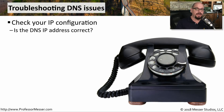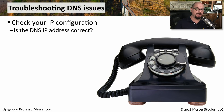The first thing you may want to check is the IP address of your local device. If you're able to ping a device on another subnet, then you know you have the correct IP address, subnet mask, and default gateway. You may also want to check the IP configuration for your DNS servers — make sure that IP addresses are listed under your DNS server configuration, and make sure they are the right IP addresses for your DNS servers.